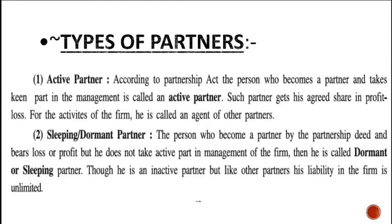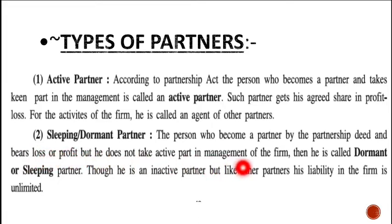The second type of partner is one who does not take an active part in the management of the firm. Such kind of partner is known as a sleeping or dormant partner. Any liability that such a partner carries will be unlimited.